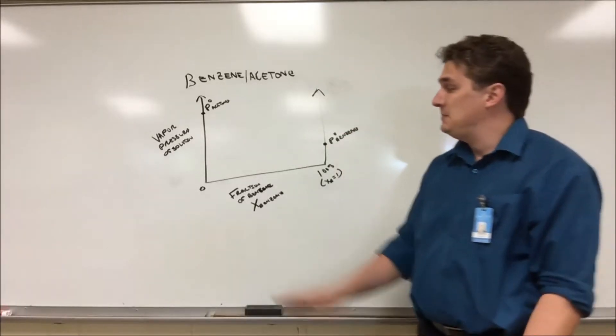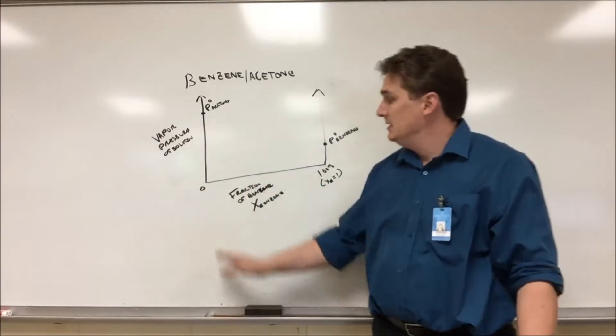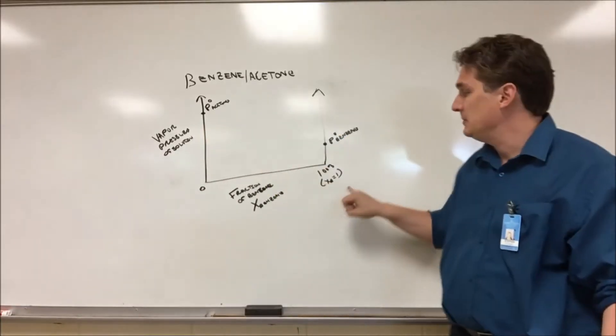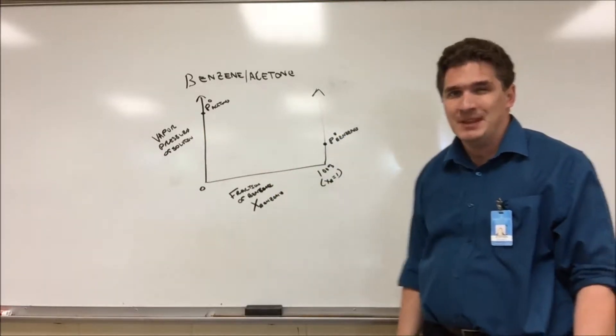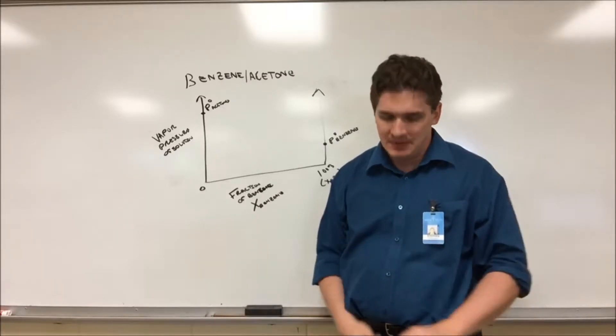So it's easy enough if we have a pure solution, we expect its vapor pressure to be the vapor pressure of whatever that liquid is. Pure acetone, it's gonna be the vapor pressure of acetone. If we've got pure benzene, it's the vapor pressure of benzene. Now here's the hard part: what does it look like between the two?